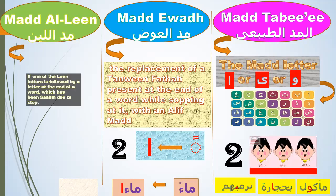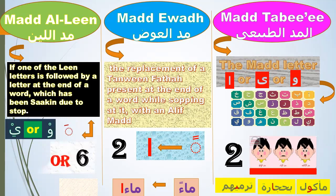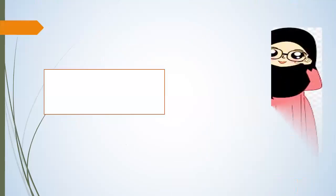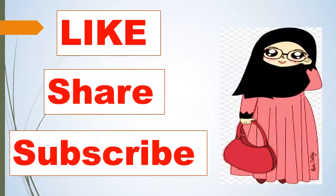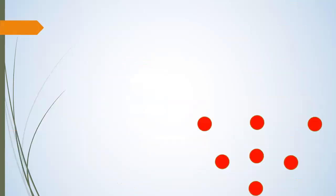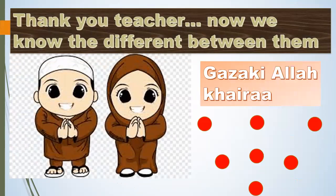Madd al-Leen — if one of the leen letters is followed by a letter at the end of a word which has sukoon due to stopping. Waw with sukoon or Ya with sukoon preceded by a letter with fatha — that's leen. You should make a long sound of two, four, or six beats. Examples: 'Khawf,' 'Bayt.' Now it's time to leave — it's great to see you today! If this video is useful for you, don't forget to like, share, and subscribe. As-salamu alaykum wa rahmatullahi wa barakatuh.